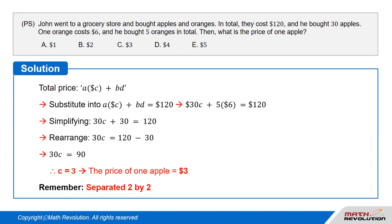As I explained, complementary 2 by 2 and separated 2 by 2 questions often appear in the exam. Understanding these concepts brings you that much closer to achieving a high score on the GMAT. C is the correct answer.